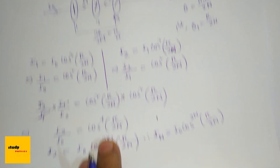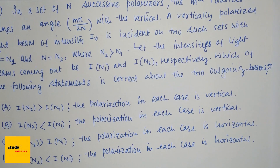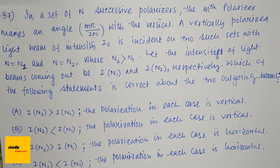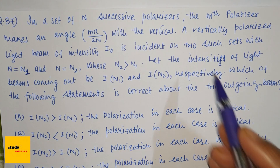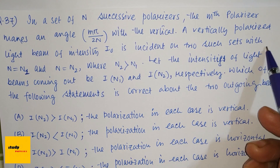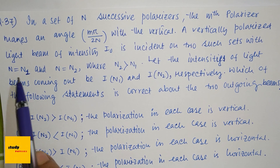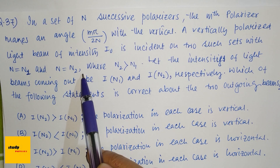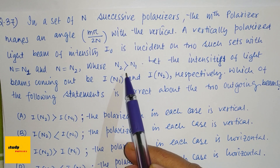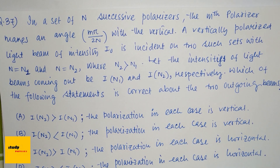They have told us that two such sets have n equal to n1 and n equal to n2, where n2 is greater than n1. In general, for n polarizers, I_n = I₀ cos^(2n)(π/2n).